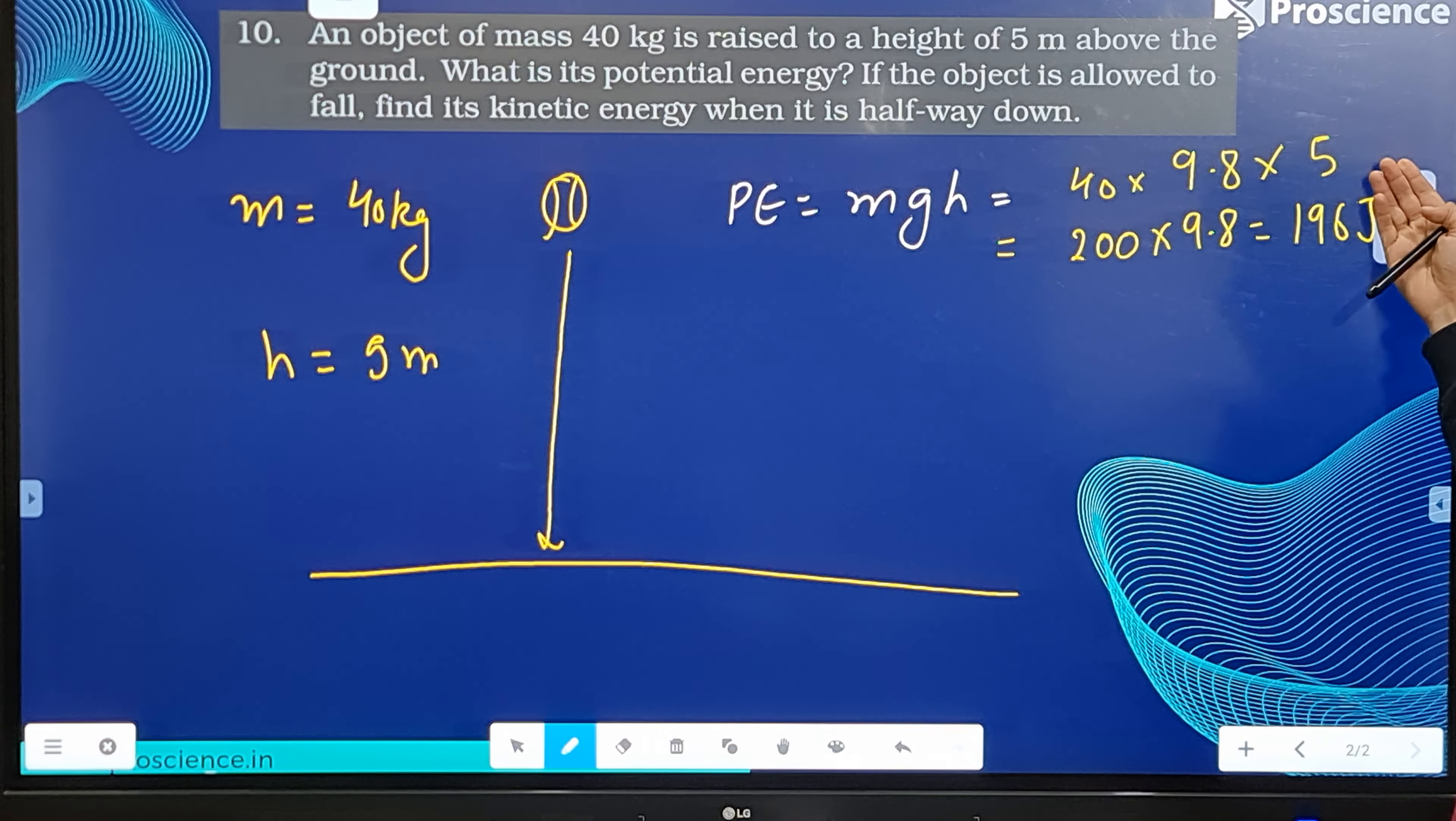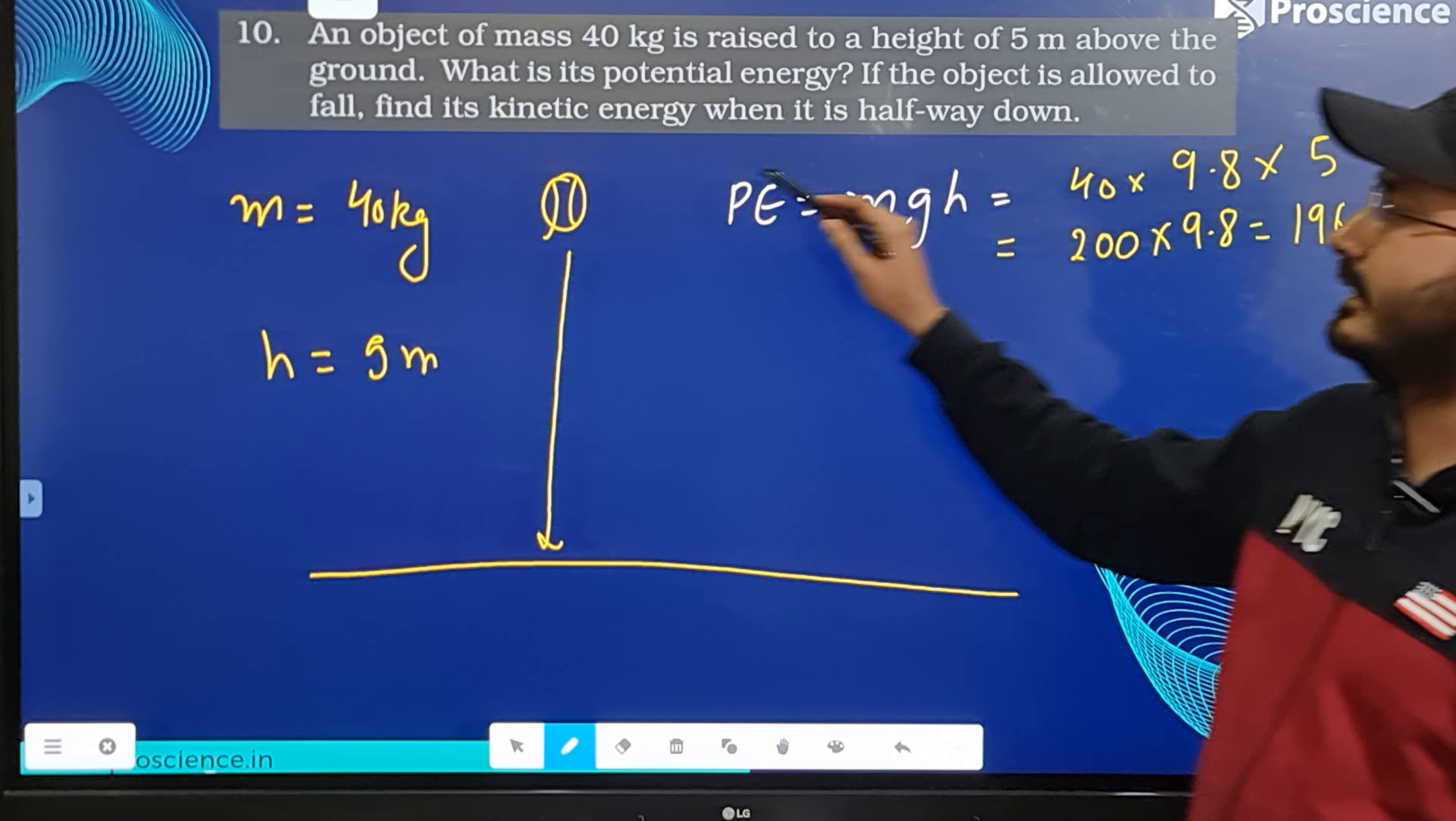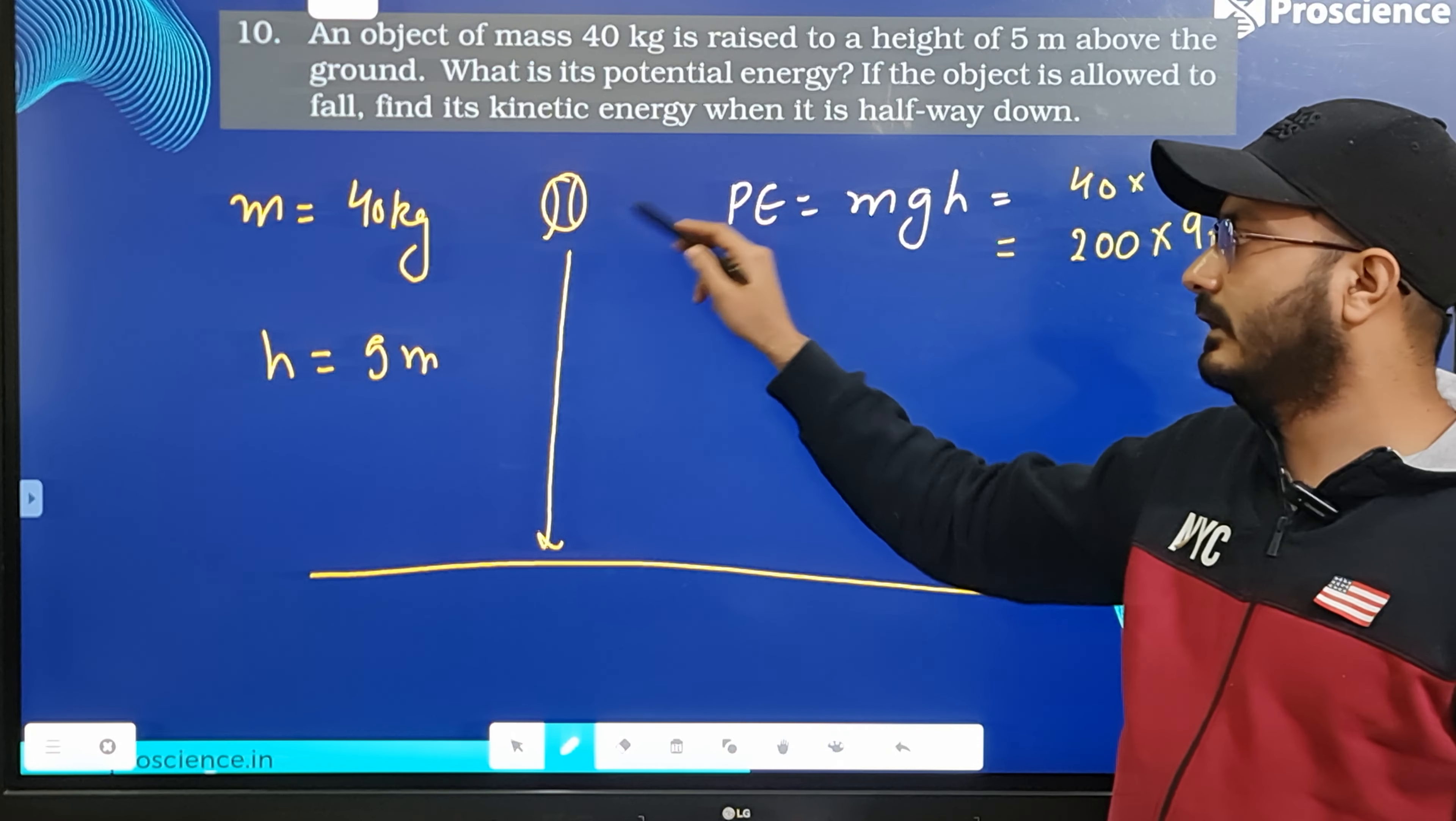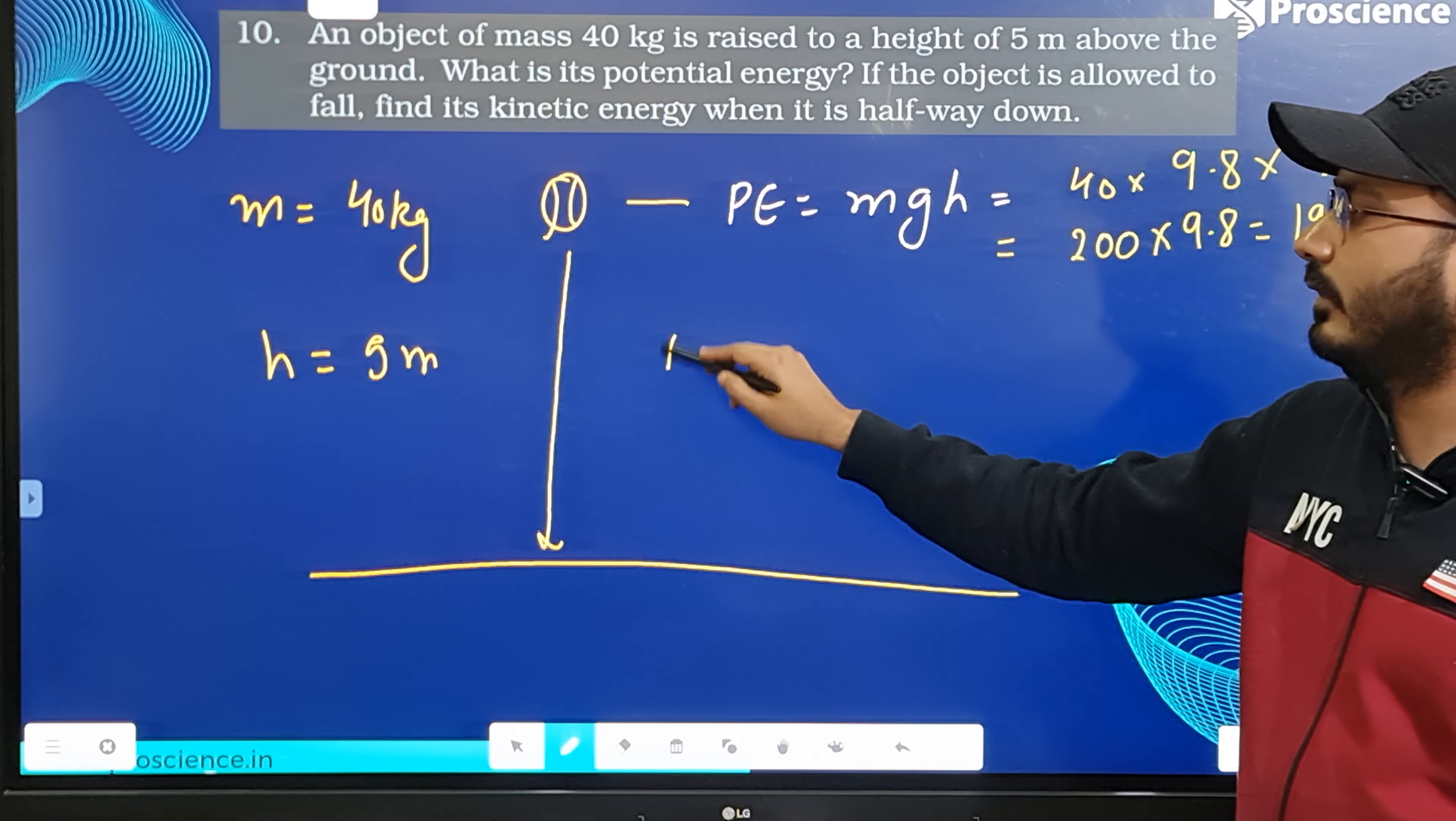Second, if the object is allowed to fall, find its kinetic energy halfway down. The total energy remains constant we know, so according to law of conservation of energy...